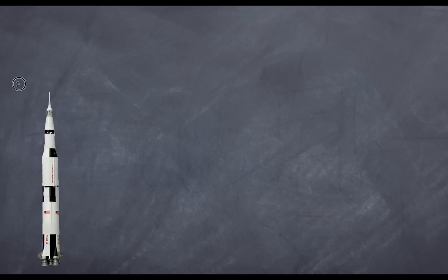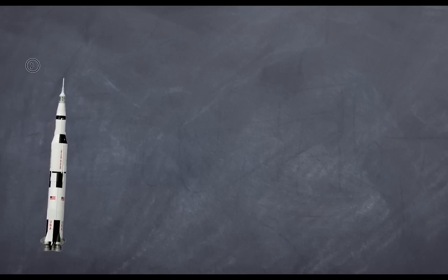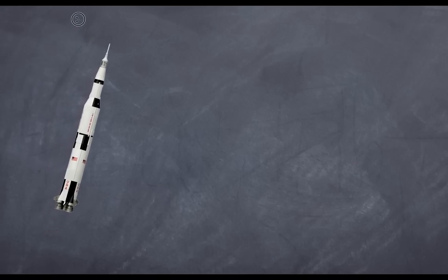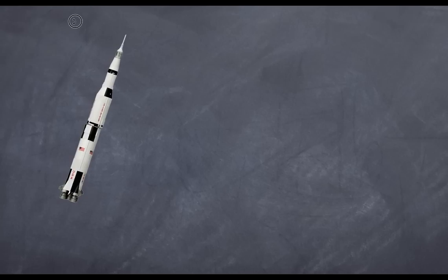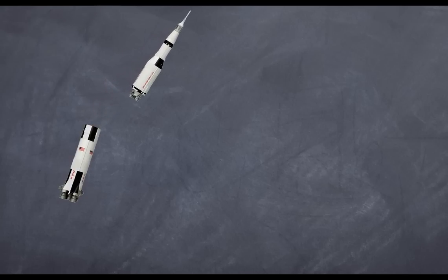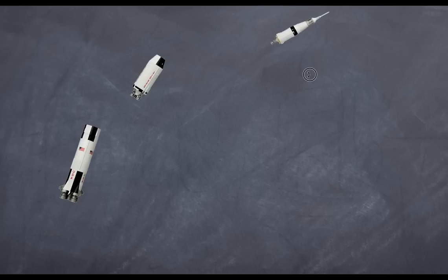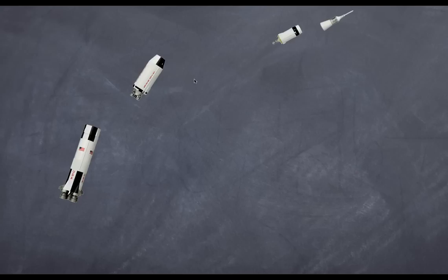The rocket goes up in sections. When it first launches, the whole rocket launches up together, but then at a certain altitude it separates — you get a stage separation. The first stage is dropped off and the second stage continues. Then the second stage is dropped off, we have the third stage, and finally that continues on.